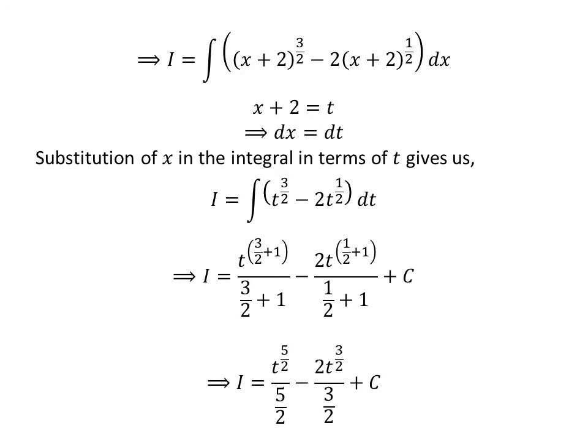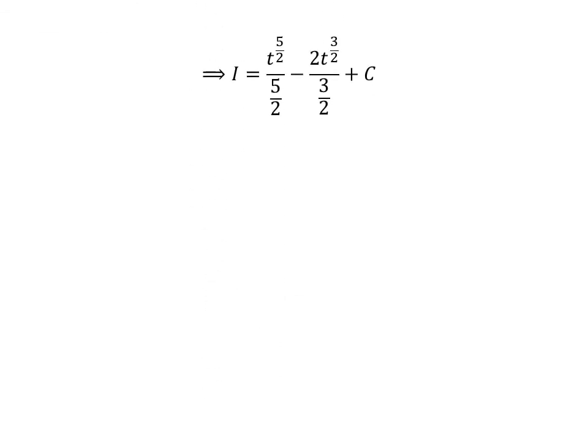Since 3/2 plus 1 equals 5/2 and 1/2 plus 1 equals 3/2, i is equal to t raised to the power of 5/2 upon 5/2 minus 2 times t raised to the power of 3/2 upon 3/2 plus capital C. Further simplification gives i equals 2 times t raised to the power of 5/2 upon 5 minus 4 times t raised to the power of 3/2 upon 3 plus capital C.